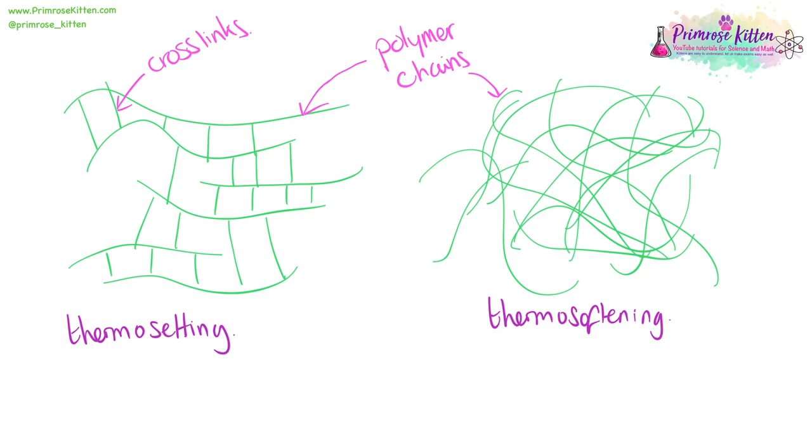Thermosetting and thermosoftening polymers have very different properties, and this is based on their structures. Both have long polymer chains in, but thermosetting have crosslinks, whereas thermosoftening don't have crosslinks.